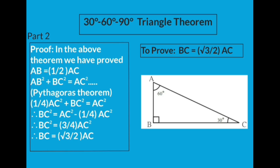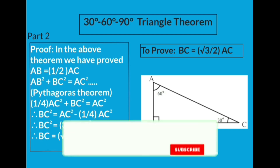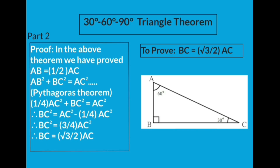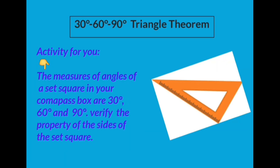And that is what we had to prove — hence the proof. Here we have proved the 30-60-90 triangle theorem: if the acute angles of a right-angled triangle measure 30 degrees and 60 degrees, then the side opposite to 30 degrees is half the hypotenuse, and the side opposite to 60 degrees is (√3/2) times the hypotenuse. Now here is an activity for you: check the angles of the set square in your compass box — whether they are 30, 60, and 90 degrees — and if yes, verify the property of the sides of the set square.